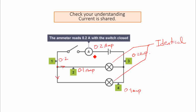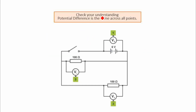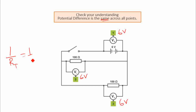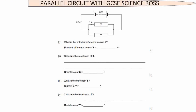Remember that potential difference is the same across all points. Across the battery it is 6 volts, which means at each branch point it's also going to be 6 volts. For resistance, you don't need to know the full calculation, but the formula is 1/R = 1/R1 + 1/R2. You just need to know that the overall resistance is going to be less in a parallel circuit.